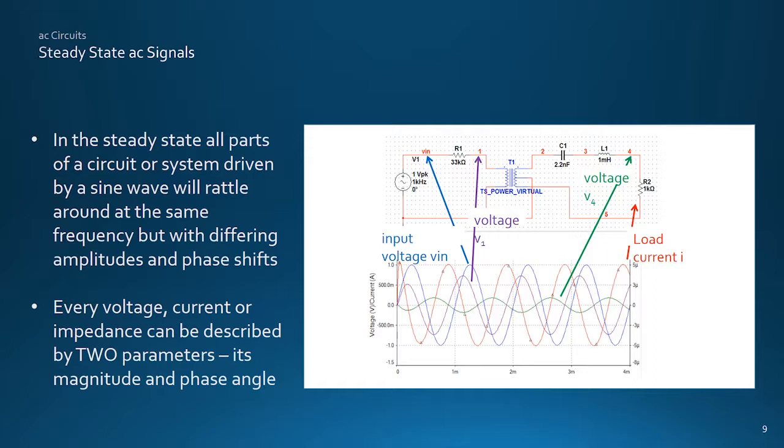So, whereas in direct current circuits we can represent each voltage, current or impedance by a single number, like 10 volts, 3 amps or 4 ohms, now to work with AC circuits we need at least two values, the amplitude and the phase shift. But the good news is, we needn't worry too much about representing the sine wave frequency, because it's common throughout.